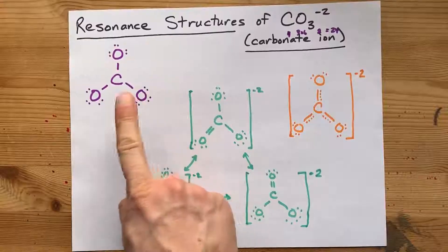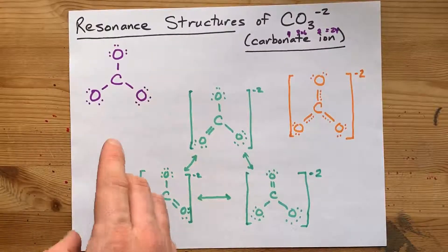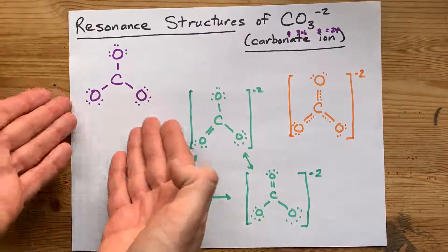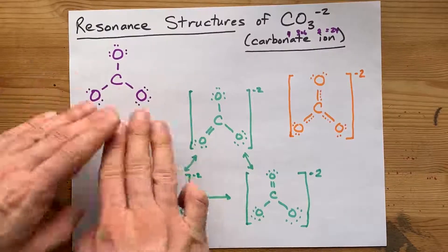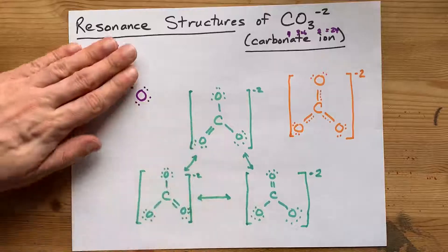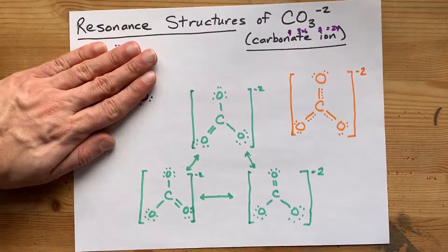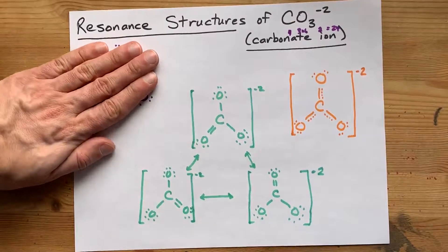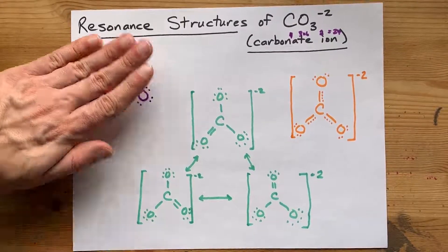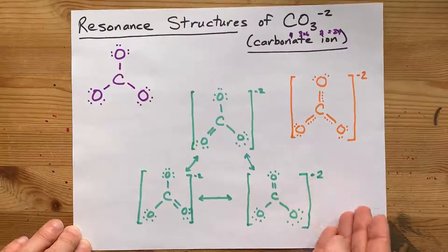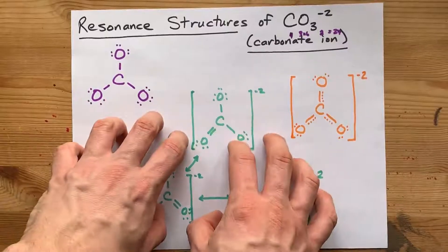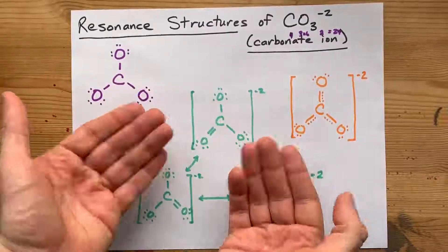This initial structure is not a valid Lewis structure — this carbon does not have a full octet, so that is the one you should not be drawing if you're asked this question. Thanks for being with me, hope it made sense, and best of luck.